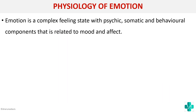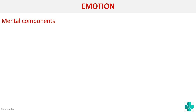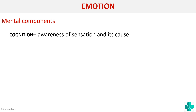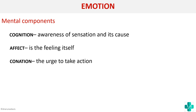Emotion has mental components: cognition is awareness of sensation and its cause; affect is the feeling itself; and there is the urge to take action. Along with these, physical components include stimulation of the sympathetic system, increased heart rate, and sweating. Fear is a fleeing or avoidance reaction, and experimentally it occurs due to stimulation of the hypothalamus and amygdala. The amygdala encodes memories that evoke fear.